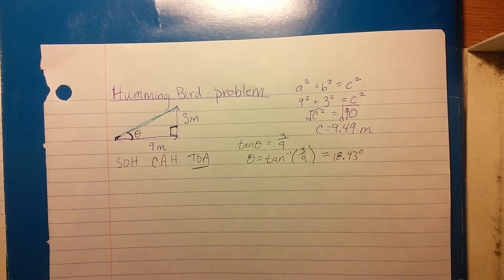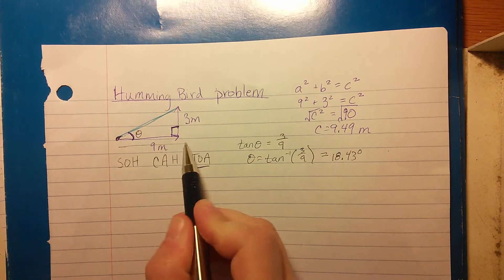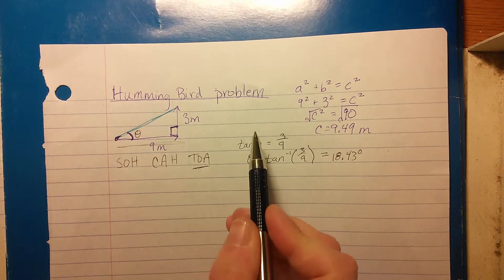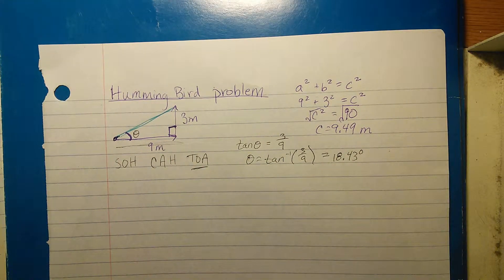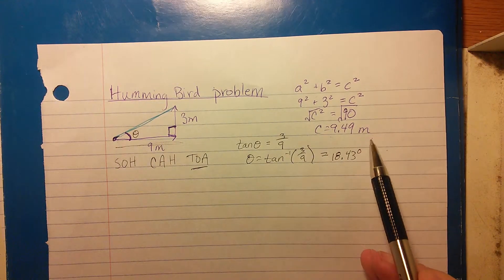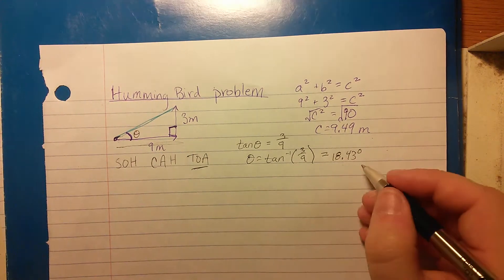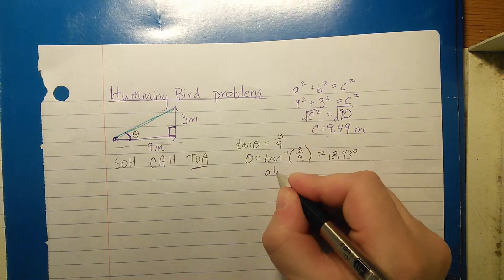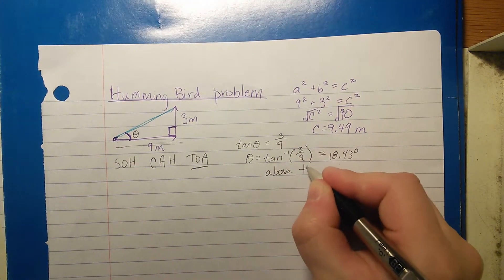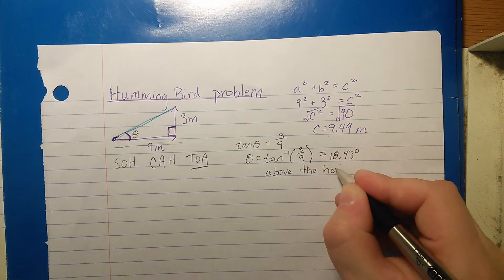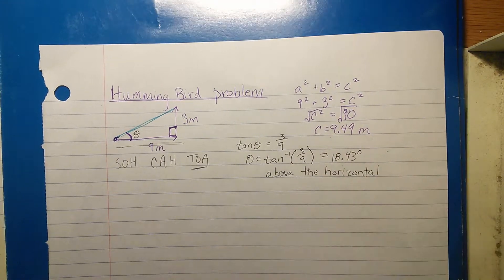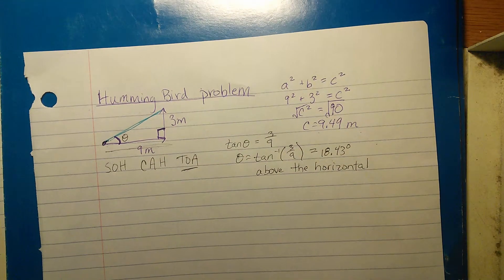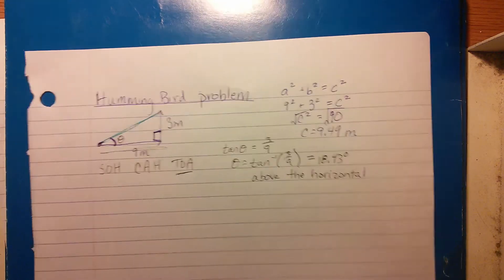We also need to add direction words in there. Remember, this line is what we call horizontal, so we would say that the hummingbird flew 9.49 meters at 18.43 degrees above the horizontal. And there's our final answer. Let's do another problem.